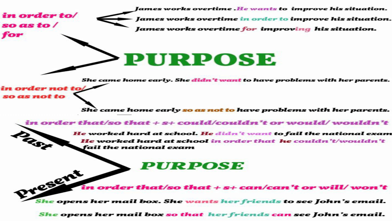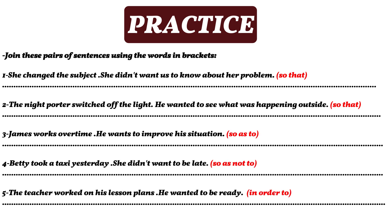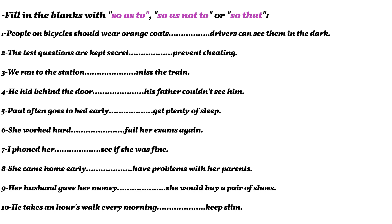There is also a distinction between negative and affirmative, and between present and past when using 'in order that' and 'so that'. Practice: pause the video, look at each pair of sentences, and join them using the expression in parentheses. For the second exercise, fill in the blanks with 'so as to', 'so as not to', or 'so that'. Read the sentences carefully and fill in the blank with the right expression.